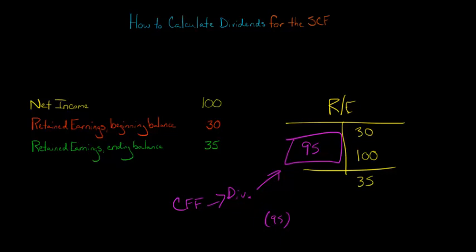Now this is assuming that basically there's only two things that are affecting retained earnings: the net income, or loss, or dividends.